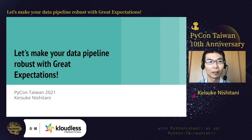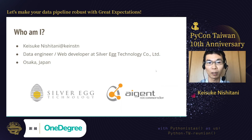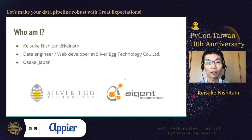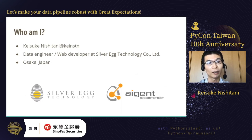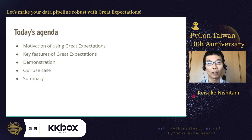Let me introduce myself briefly. I'm Kees Kenishitani from Japan. I'm a data engineer and web developer at Silver X Technology Corporation in Japan, headquartered in Osaka. We are one of the leading companies in the AI marketing field in Japan. We provide several marketing services using our personalized technology and our own recommendation engine, a service named Agent Recommender. I'm in charge of the backend system of this recommendation service, and we are running the ETL pipeline on AWS. Today I'd like to share my experience of introducing Great Expectations to our ETL pipeline.